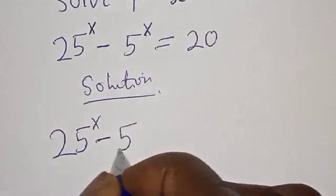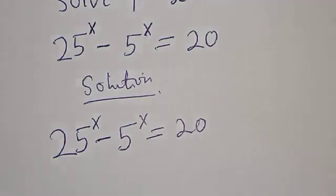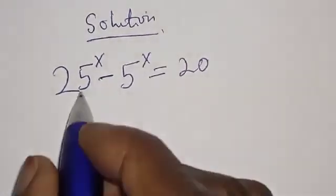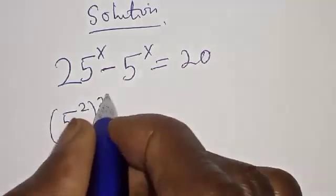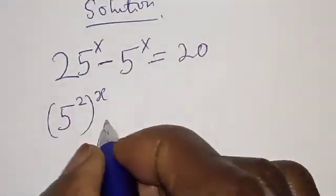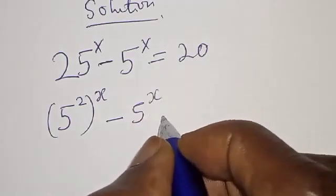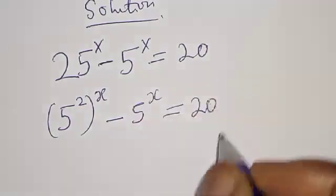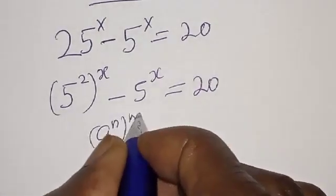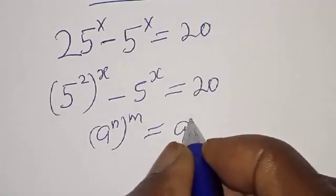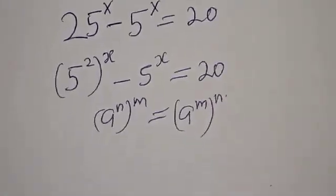Solution: we have the given equation 25 raised to power x minus 5 raised to power x is equal to 20. Now, 25 is the same as 5 squared, so we write 5 squared raised to power x minus 5 raised to power x is equal to 20. Remember, if you have a raised to power n raised to power m, that is the same as a raised to power m times n.